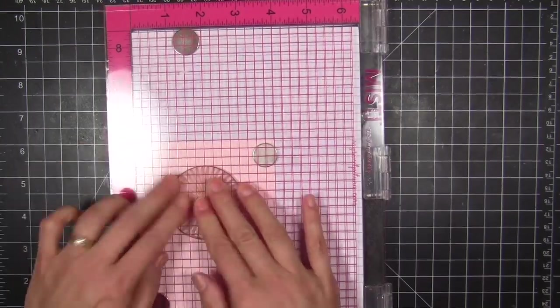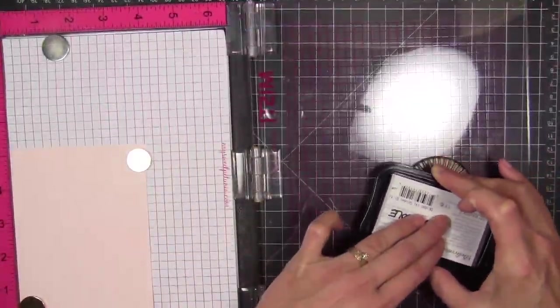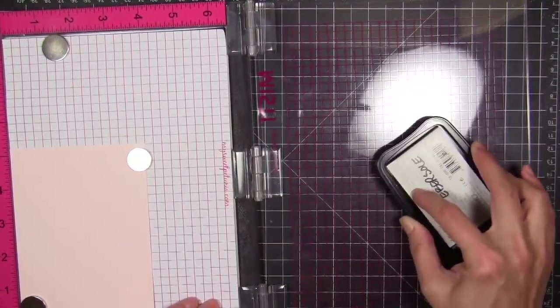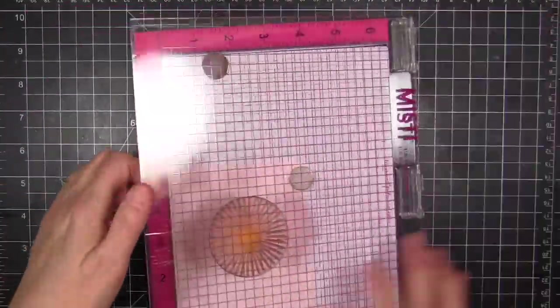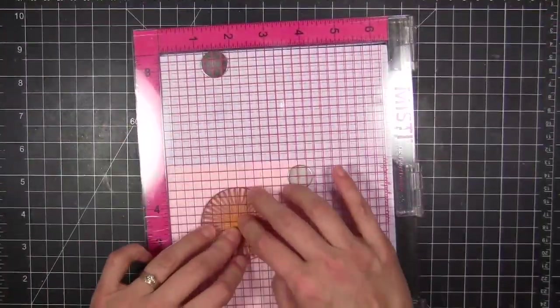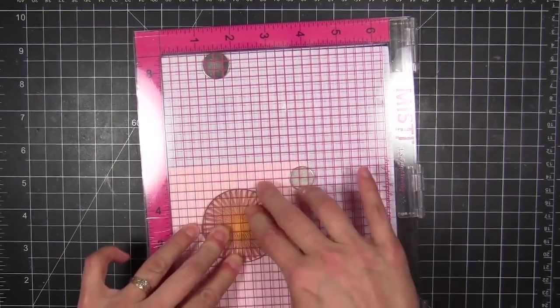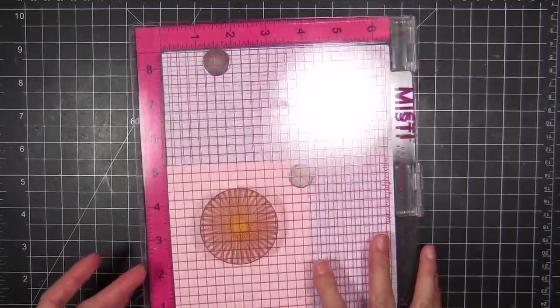Those magnets are holding my cardstock in place so it doesn't shift. Then I can press the stamp down onto my cardstock surface by closing the lid. And there you can see I've got a crisp impression because of that cool foam pad that's underneath, which is also magnetized.